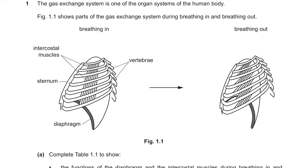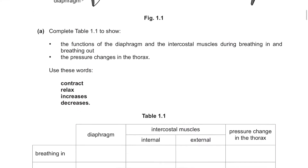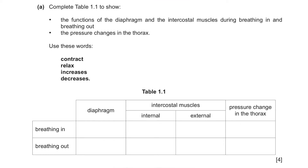Question 1. The gas exchange system is one of the organ systems of the human body. Figure 1.1 shows parts of the gas exchange system during breathing in and breathing out. Part A: Complete Table 1.1 to show the functions of the diaphragm and the intercostal muscles during breathing in and breathing out.